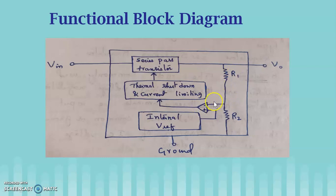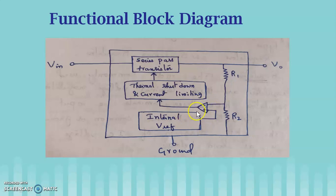The sample of the output voltage is applied to the op-amp with the help of a potential divider network consisting of two resistors R1 and R2. Once these two inputs are given to the op-amp, depending upon whether the output voltage is less than or greater than the reference voltage, the op-amp generates a signal which is applied to the series pass transistor, which in turn controls the output voltage. There is also a thermal shutdown circuit which helps in switching off the IC regulator.